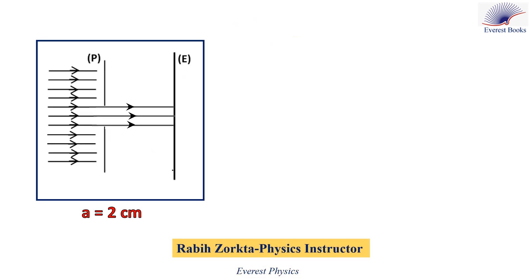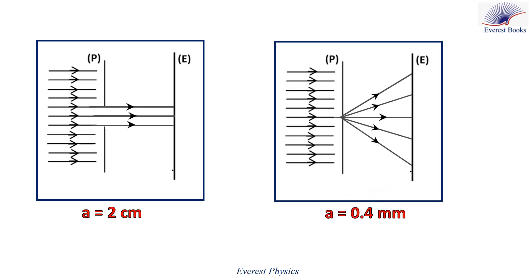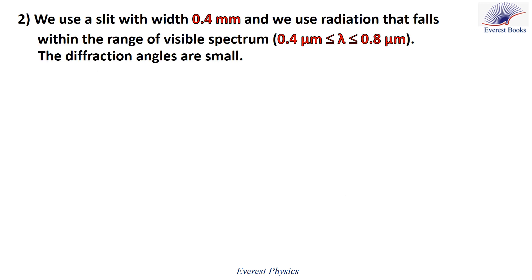For a equals 2 centimeters, since we have visible light and a is much greater than 1 millimeter, we do not observe diffraction and the light obeys the principle of rectilinear propagation. In the second case, a equals 0.4 millimeters, and we have visible light, so the emergent beam spreads out and we have the diffraction phenomenon.